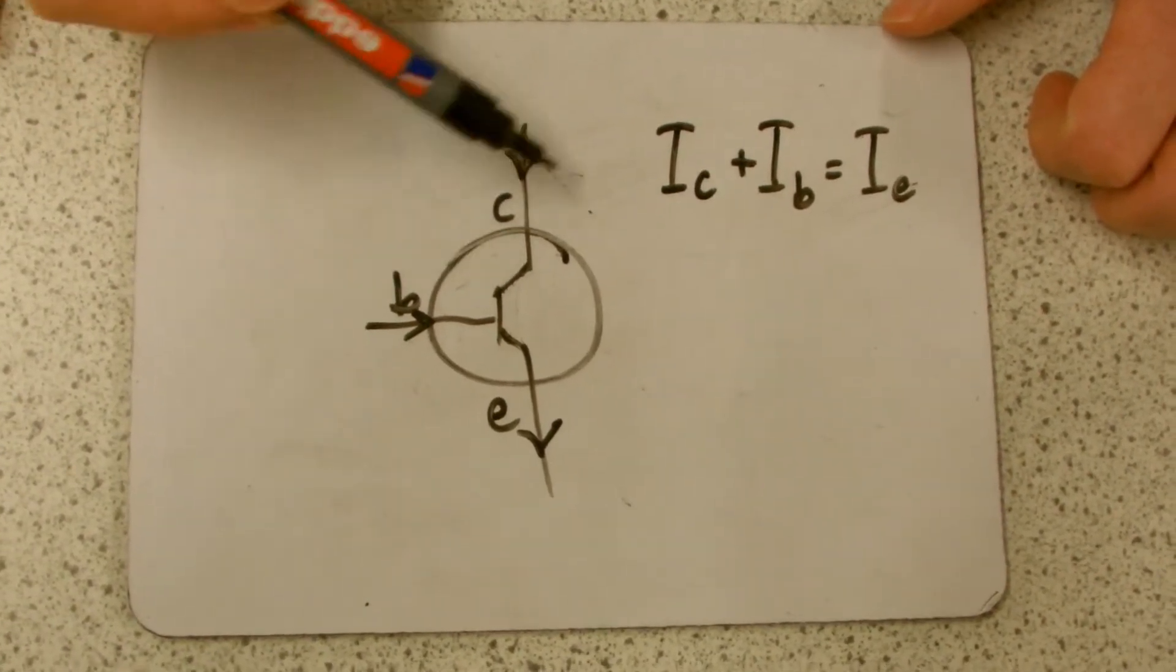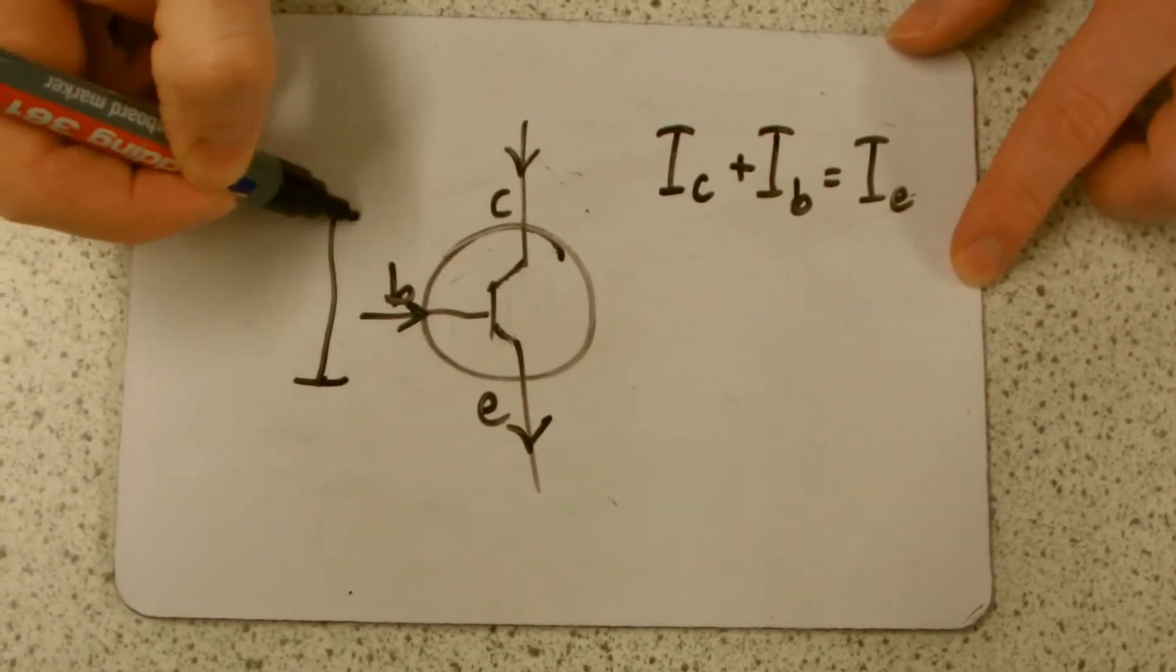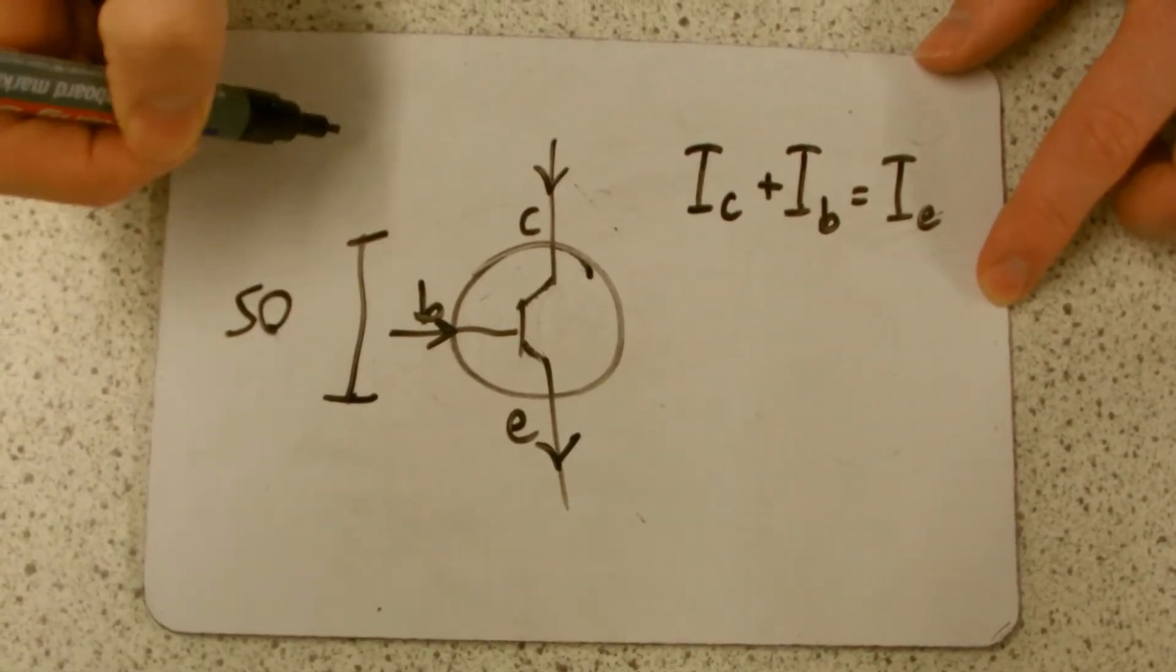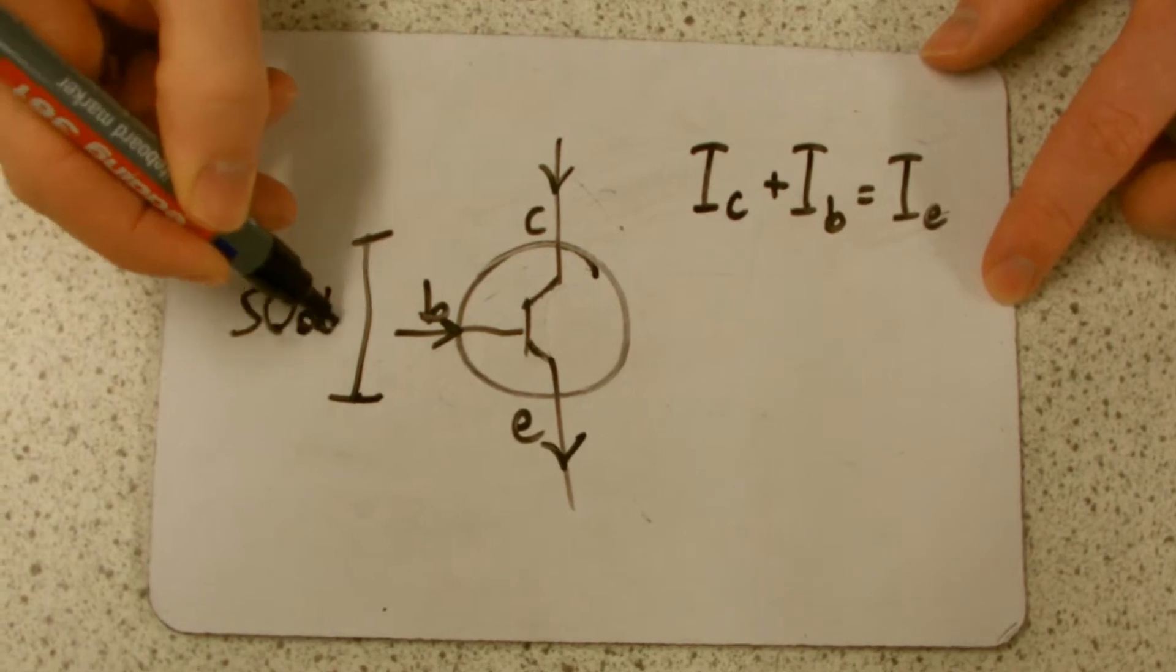Without a transistor we can't have computing. And they're actually manufactured so they're about 50 atoms big, which is quite small isn't it really?